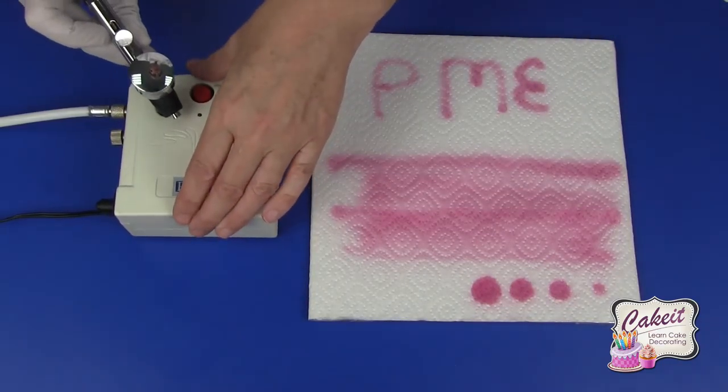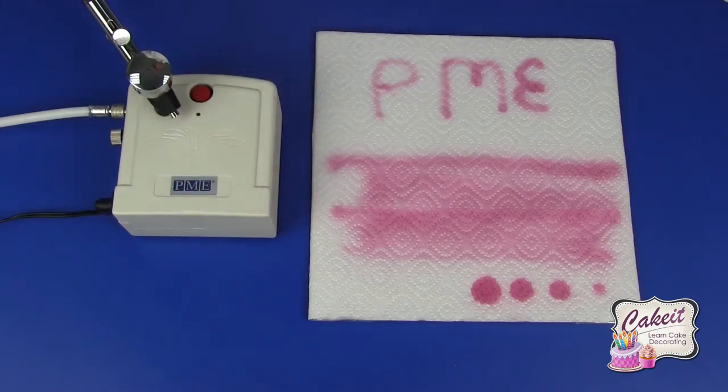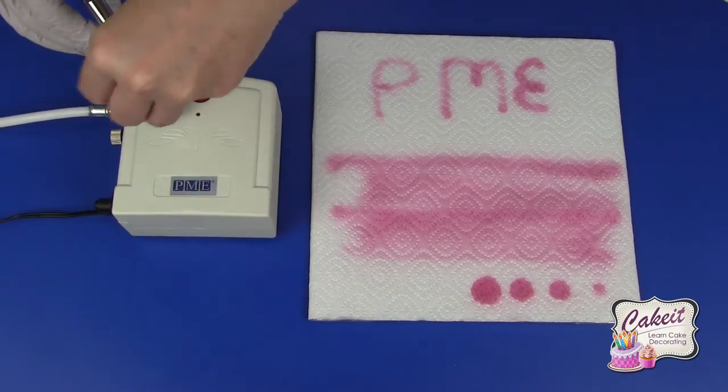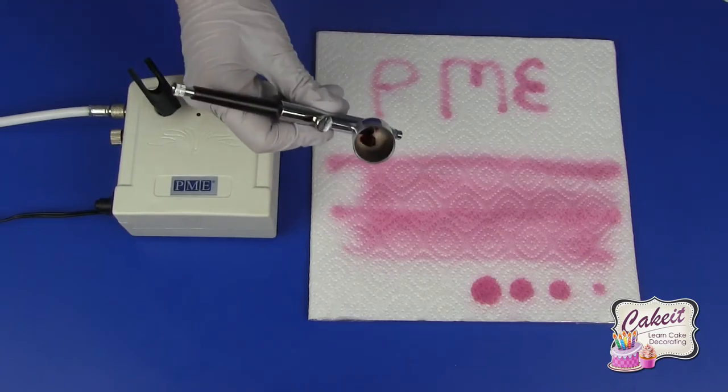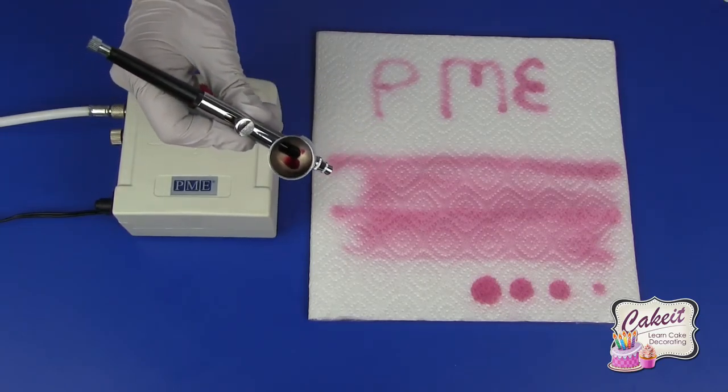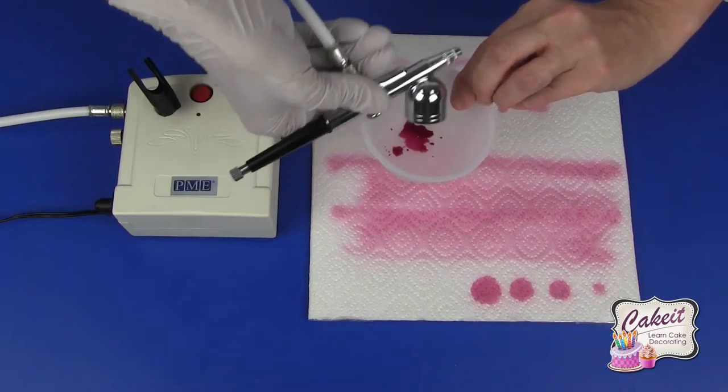So now I'm going to clean out my airbrush by removing the lid. Make sure that you remove any excess colour into the pot so just tip that out.